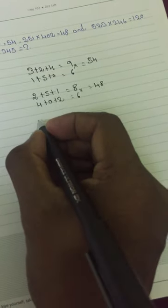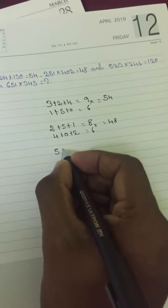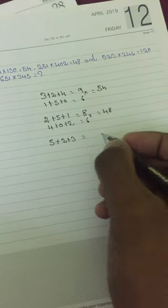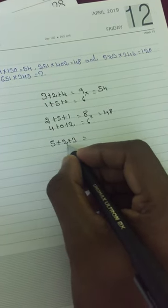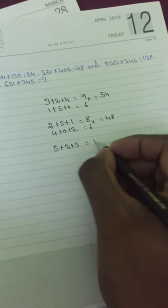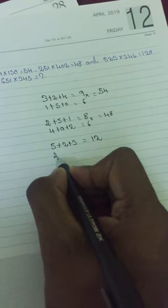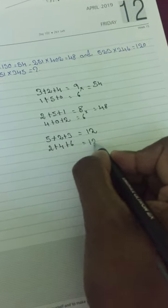Okay, what about five plus two plus three? That's ten. Also two plus four plus six equals ten.